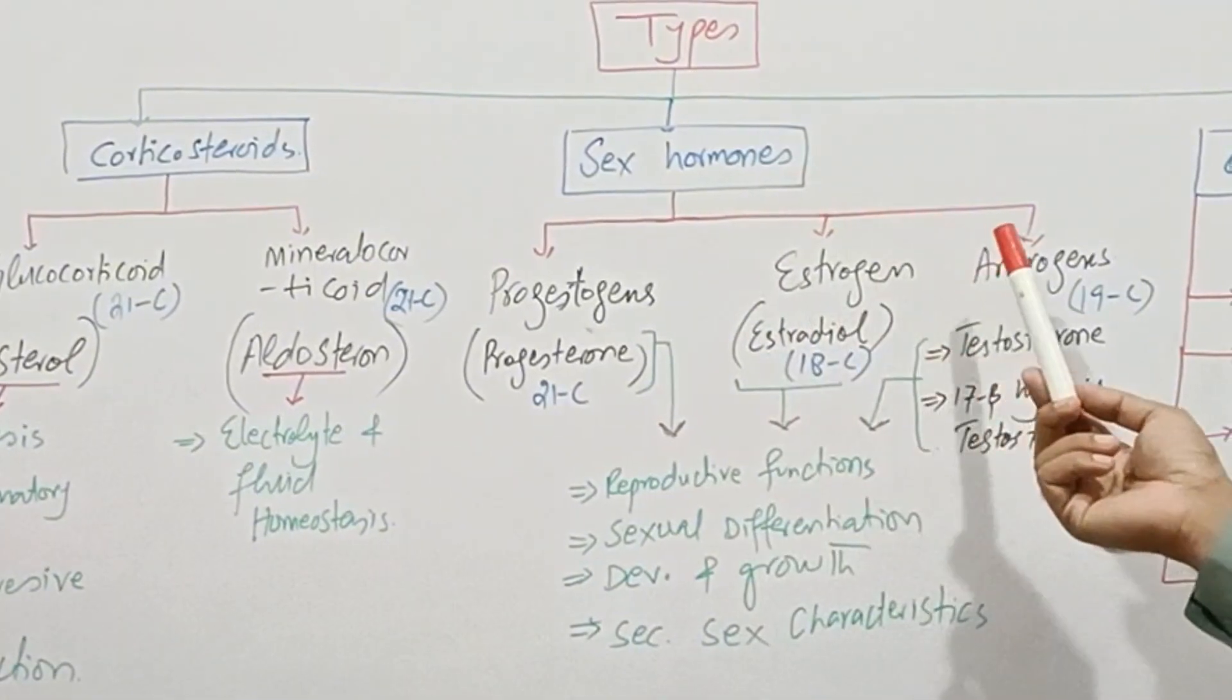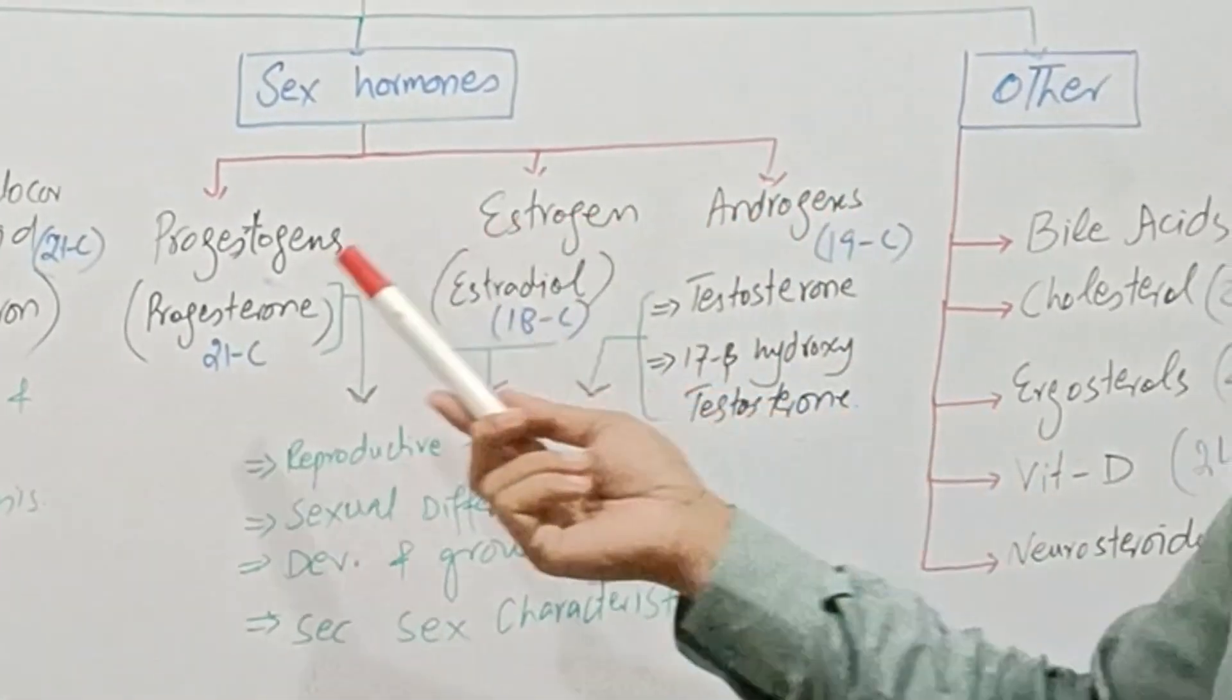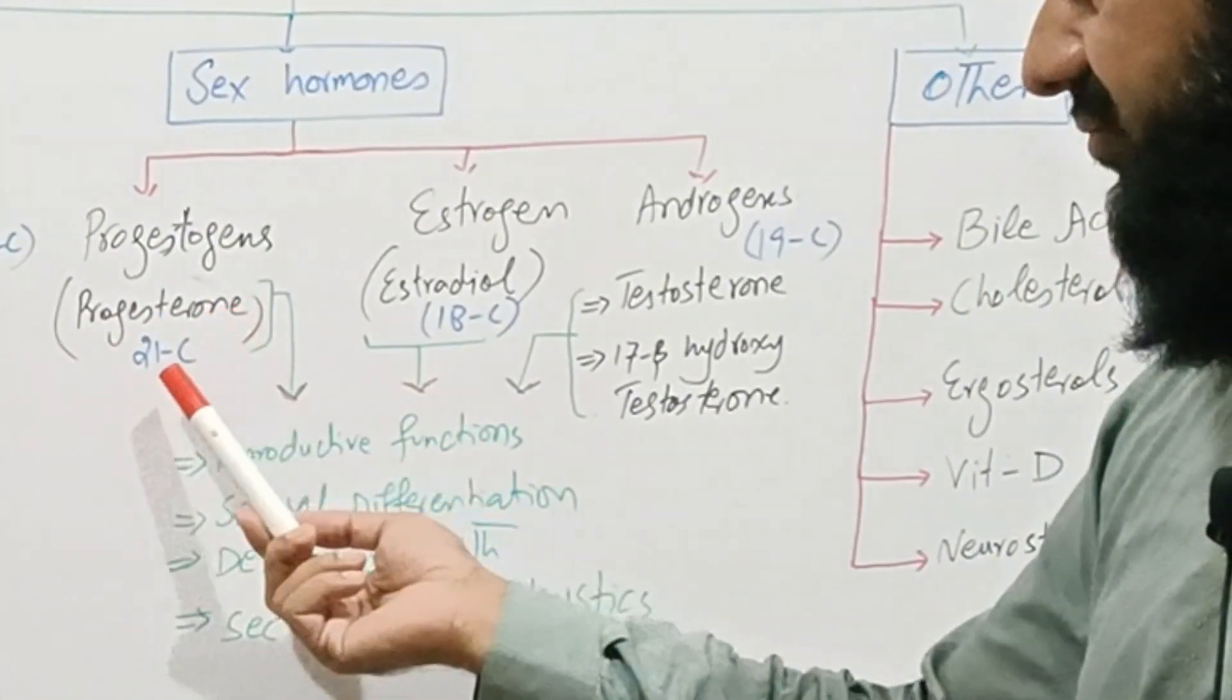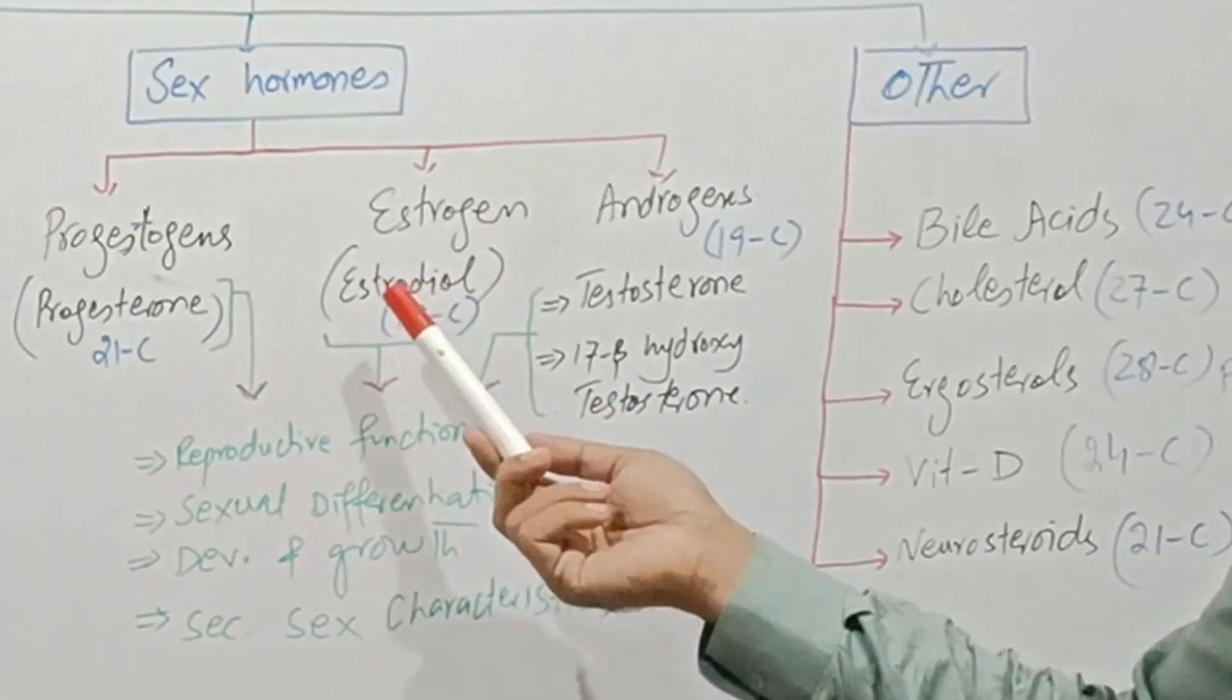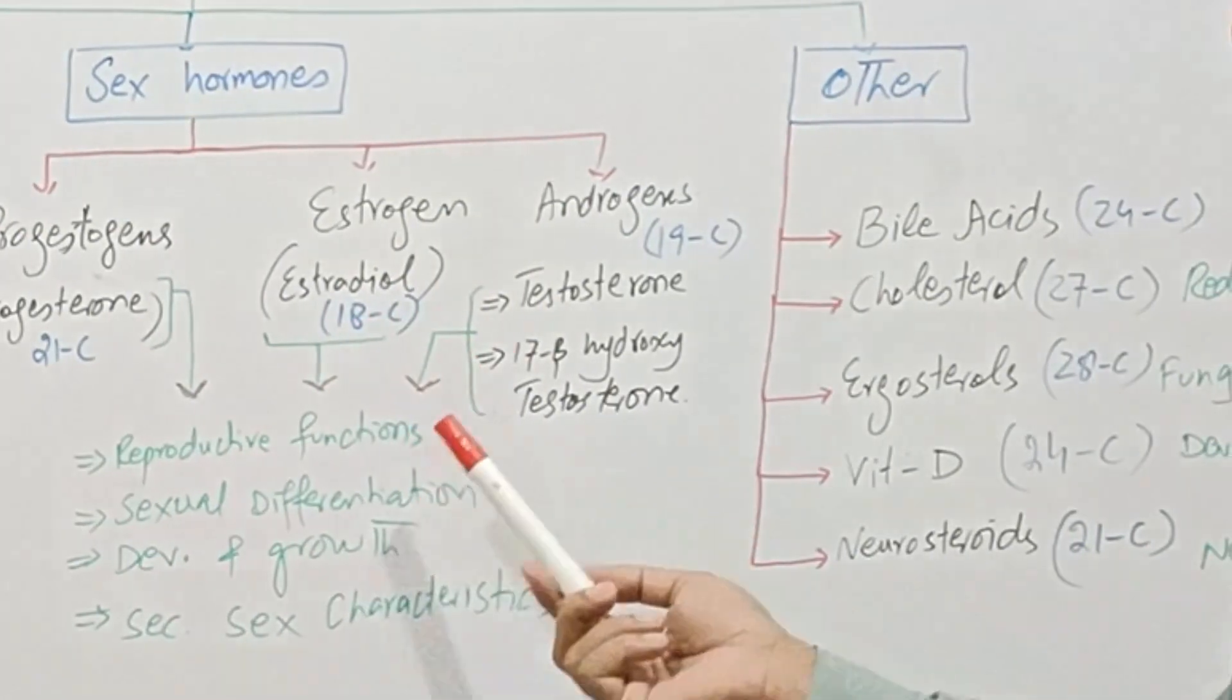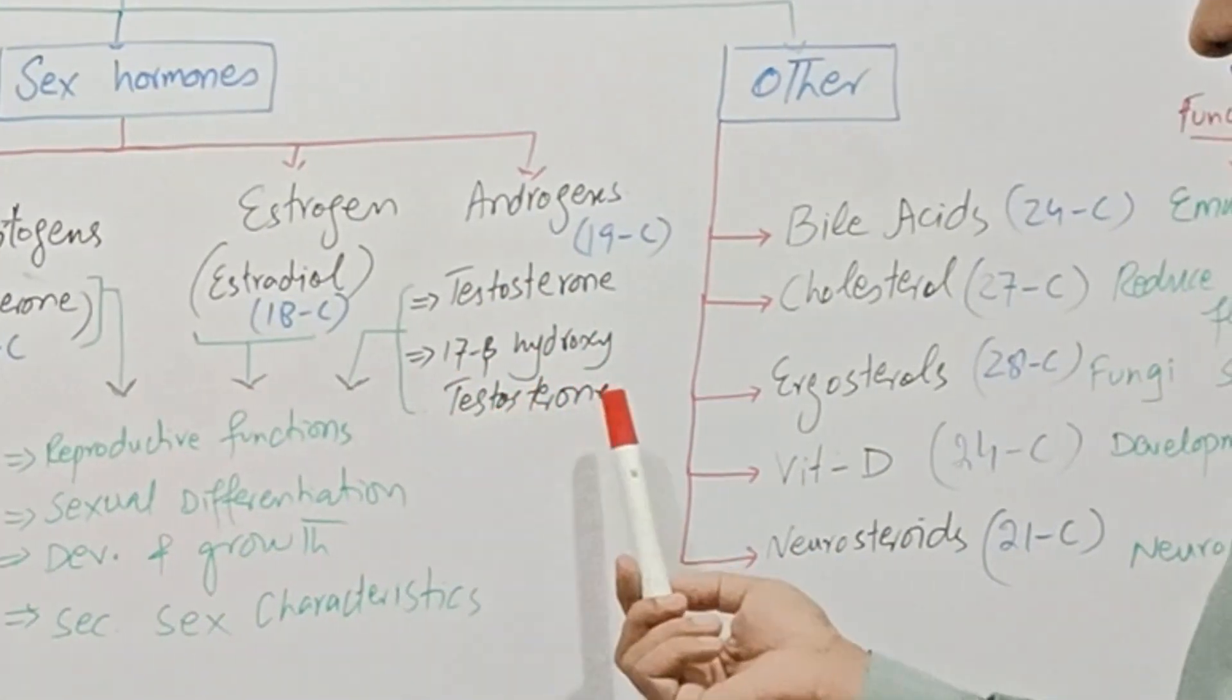There are three types of sex hormone classes: progestogens, estrogens, and androgens. Progestogens, the example of this hormone is progesterone, a female sex hormone containing 21 carbons. Estrogen, example of this hormone is estradiol and it contains 18 carbons. And androgens, the example is testosterone, 17 beta hydroxy testosterone.